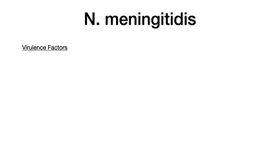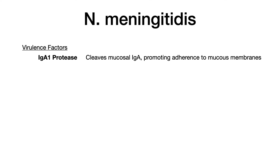Now virulence factors are very important. The first is IgA1 protease. What this does is it cleaves mucosal IgA. The high-yield thing to know for immunology and on exams is that if you see IgA, you want to think about mucosal surfaces. So a protease that cleaves mucosal IgA thereby allows the bacteria to adhere to mucous membranes, because IgA is involved in immunity specifically with mucous membranes.